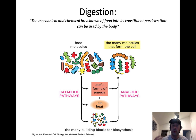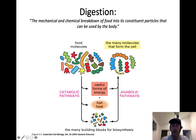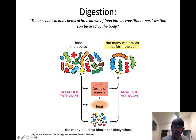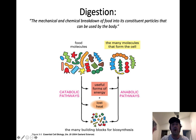So digestion, when you think about what it is, it's the mechanical and chemical breakdown of food into its constituent particles that can be used by the body. When you're thinking about these macromolecules, these represent things like proteins, polysaccharides, disaccharides, polynucleotides, or nucleic acids like DNA and RNA. They also represent vitamins, minerals, and things like that.